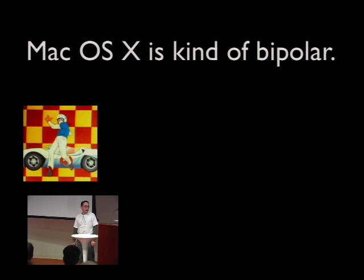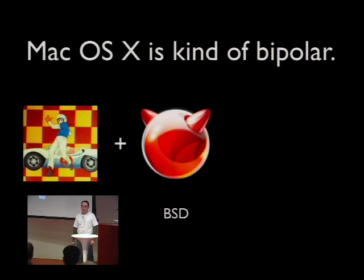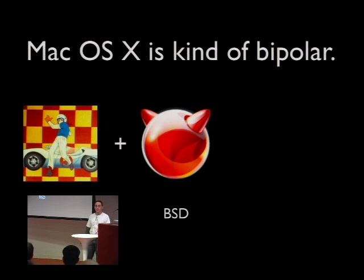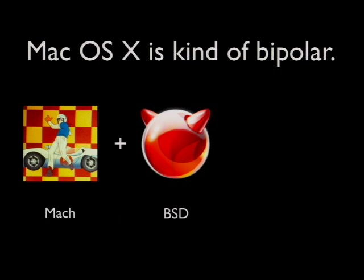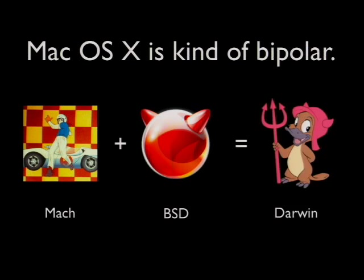In a hurry, back in the NeXT days, they dumped a huge monolithic BSD right on top, because they needed file systems, TCP/IP, and Unix interoperability most of all. They kind of shimmed a BSD layer on top of Mach. So they've got this top-heavy two-headed daemon that's half Mach and half BSD — they call it Darwin.